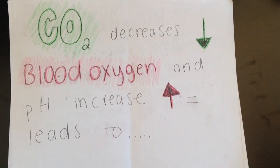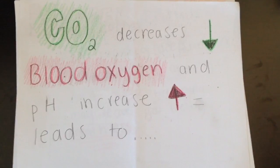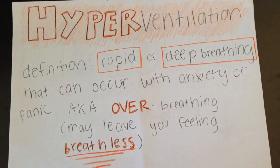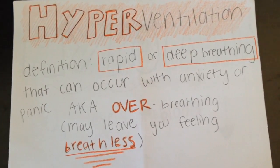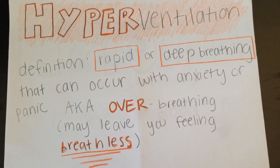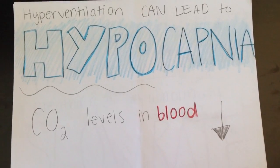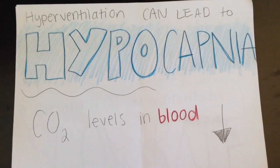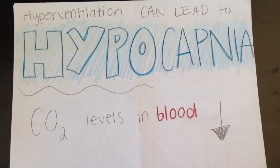When carbon dioxide decreases, blood oxygen and pH increase, which leads to hyperventilation. Hyperventilation is rapid or deep breathing that can occur with anxiety or panic. It is also known as over-breathing and may leave you feeling breathless. Hyperventilation can lead to hypocapnia, which is when carbon dioxide levels in the blood decrease.